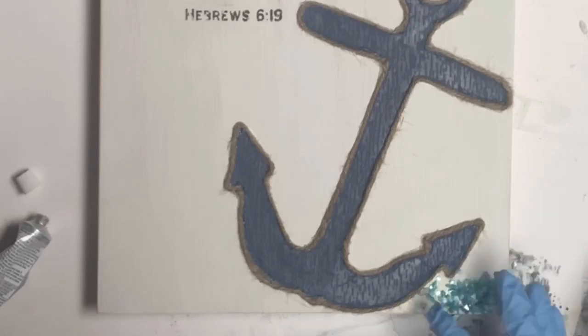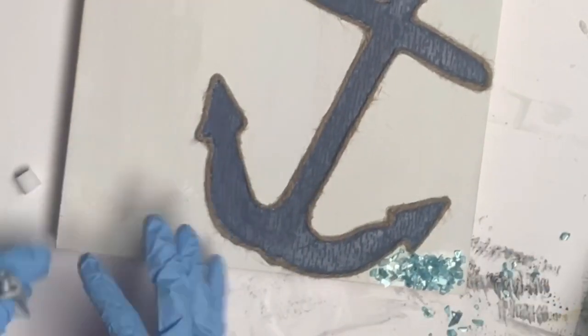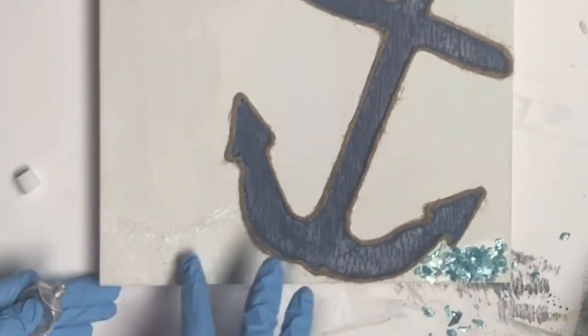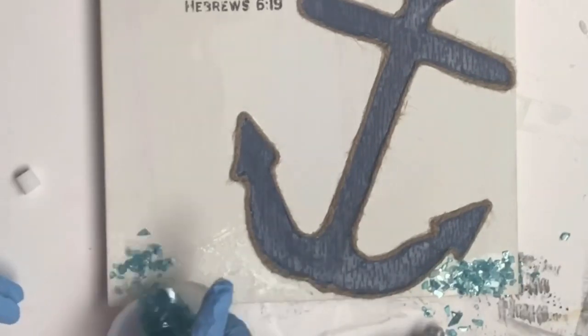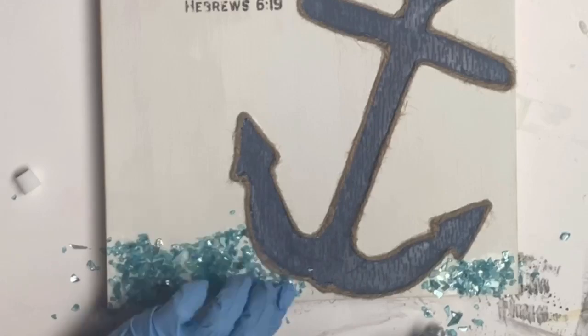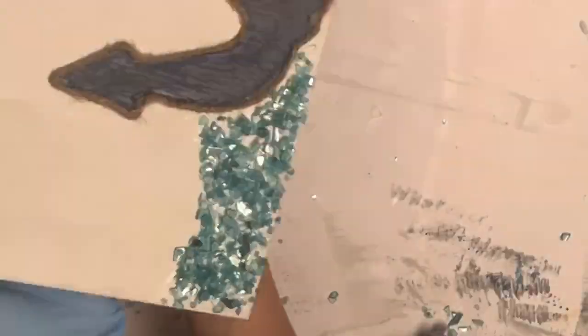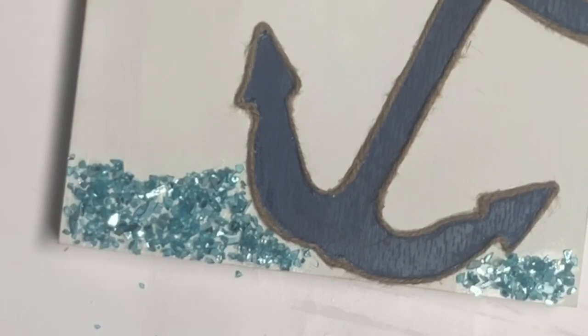I had an afterthought of applying some little blue crystal rocks at the bottom so I took some E6000 glue. With some gloves on I just wiped the glue on the bottom of the board and then I dumped the little gems at the bottom. I let that sit and dry.